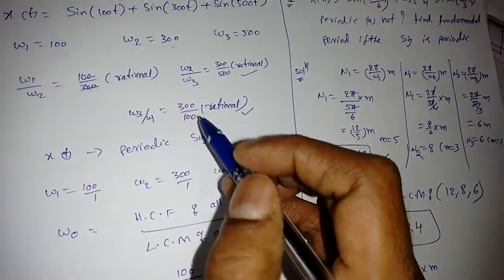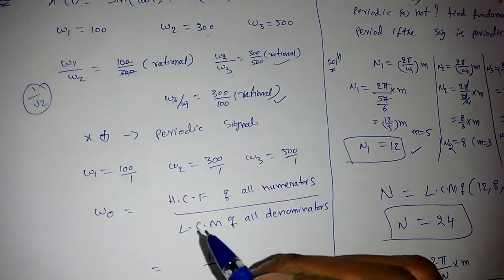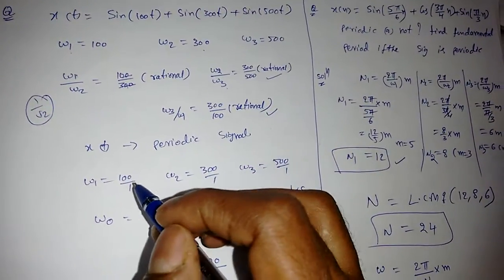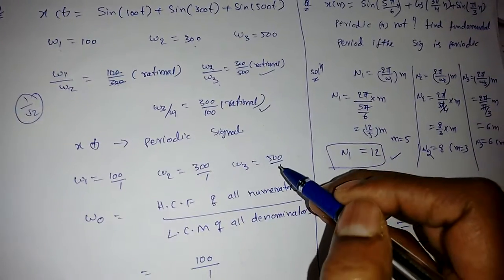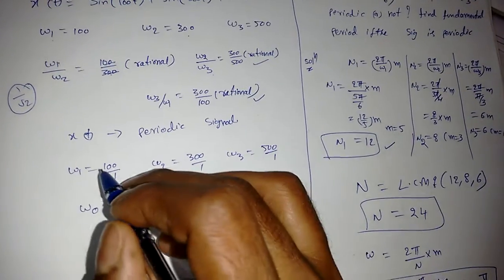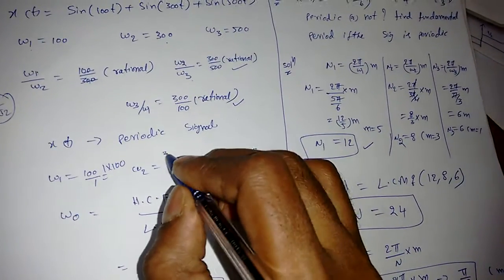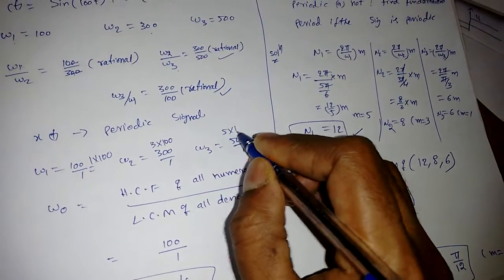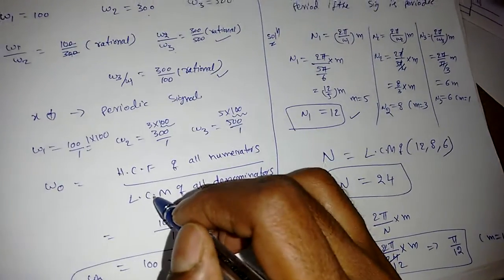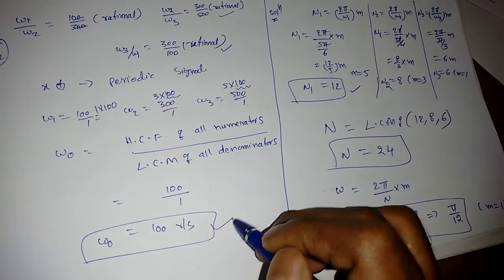If we encounter something like 1/√2, that would be irrational. But once we confirm it is periodic, we write ω1 = 100/1, ω2 = 300/1, ω3 = 500/1. The fundamental frequency is the highest common factor of all numerators. The numerators can be written as 1×100, 3×100, and 5×100, so the GCF is 100.